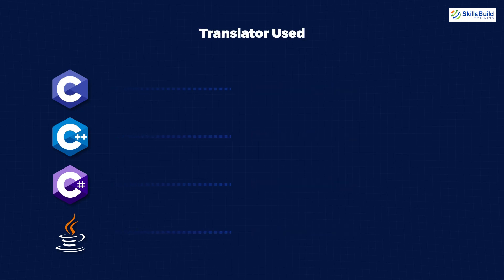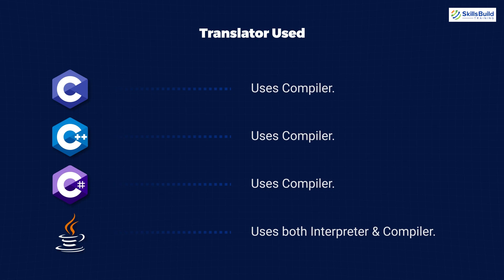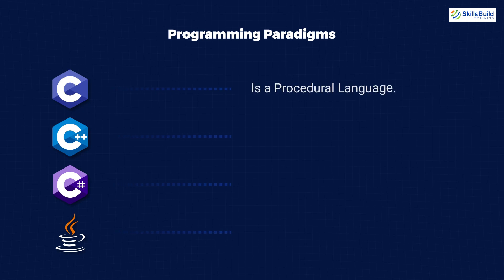If we talk about the translators these languages use to interpret code into machine language: C uses a compiler, C++ also uses a compiler, and C# also uses a compiler. Java, however, uses both a compiler and an interpreter — it is an interpreted language.